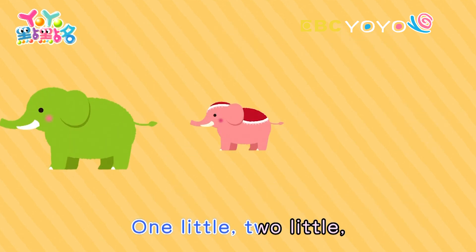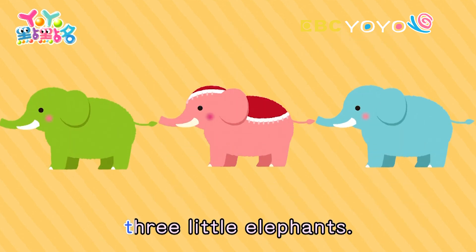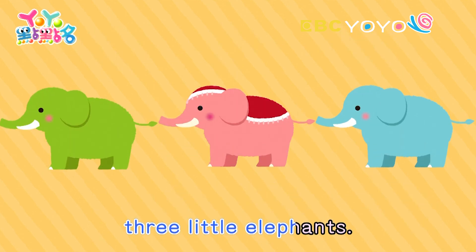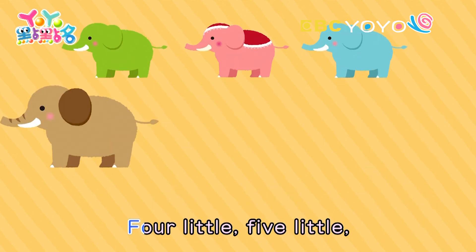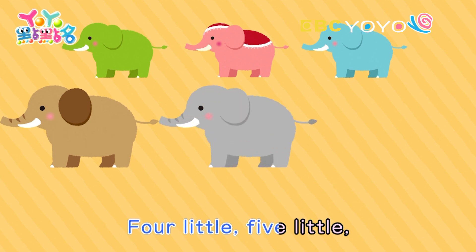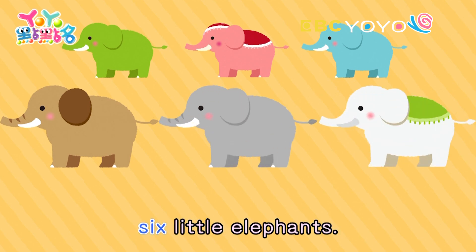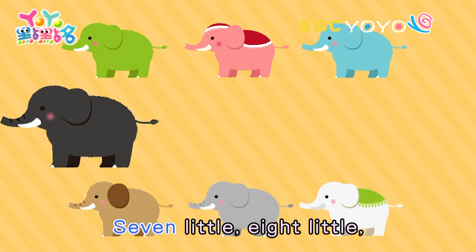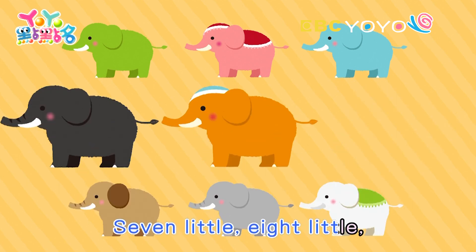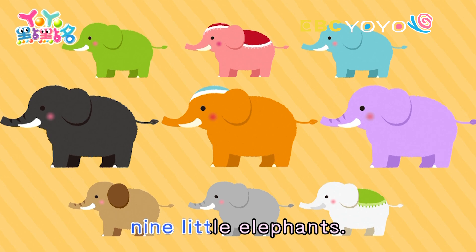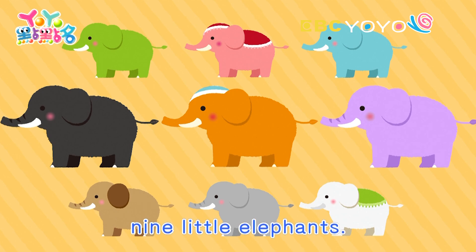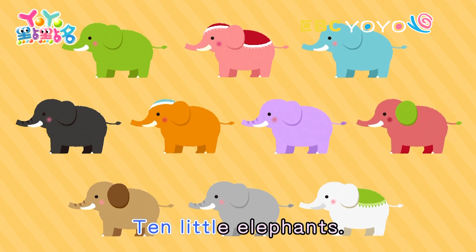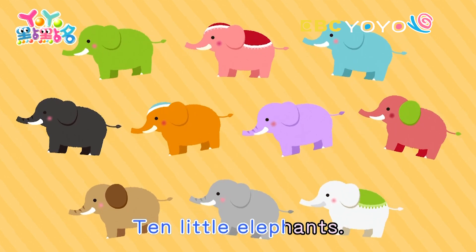One little, two little, three little elephants. Four little, five little, six little elephants. Seven little, eight little, nine little elephants. Ten little elephants.